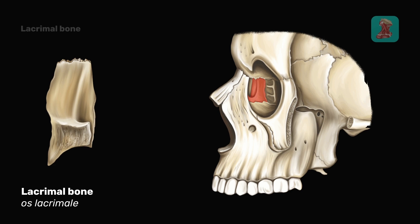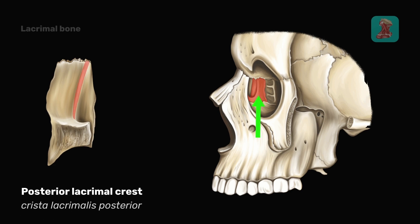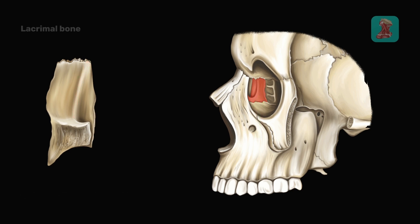On the lateral surface of the bone there is the posterior lacrimal crest. From below it ends with the lacrimal hamulus.